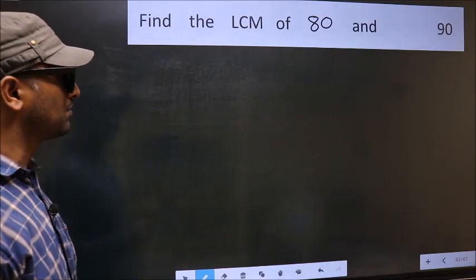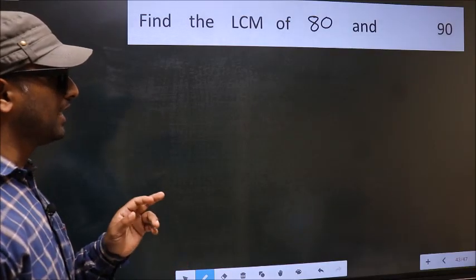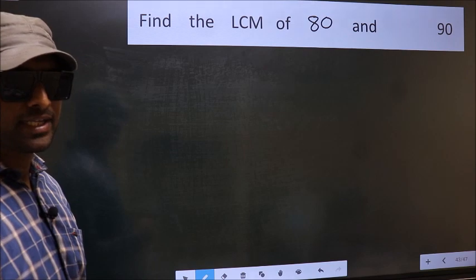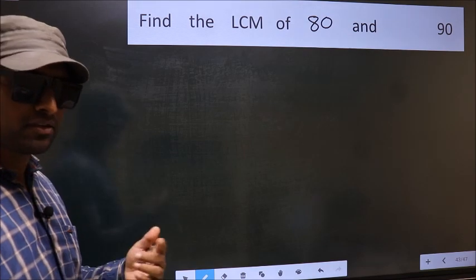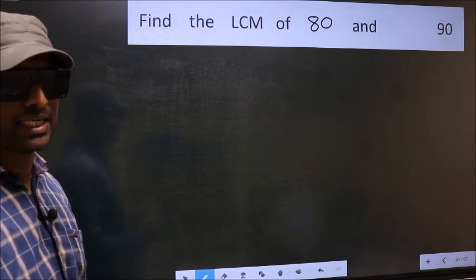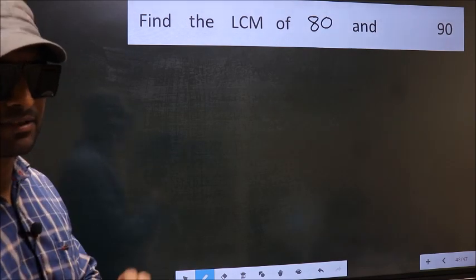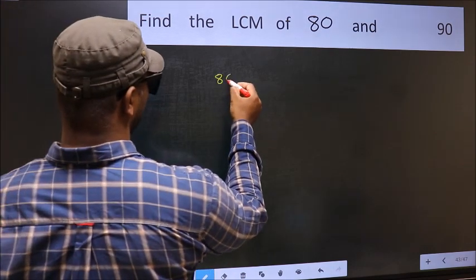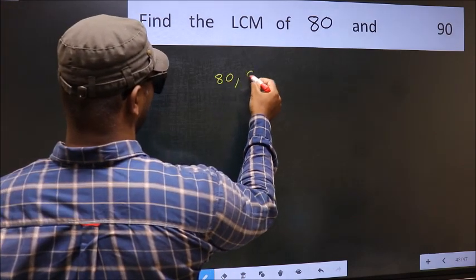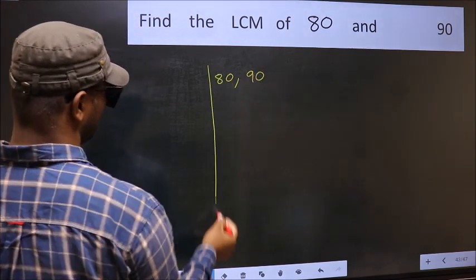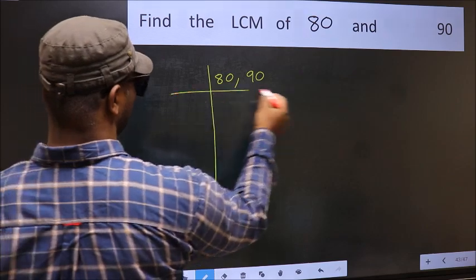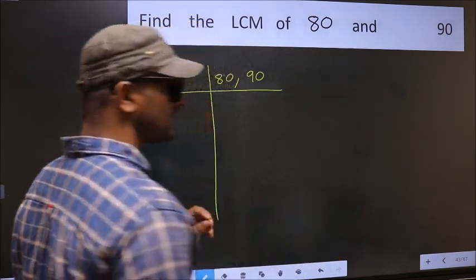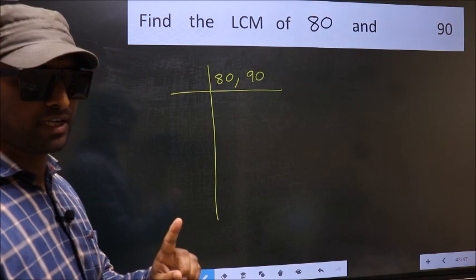Find the LCM of 80 and 90. To find the LCM, we should frame it in this way — writing 80 and 90. This is step 1.